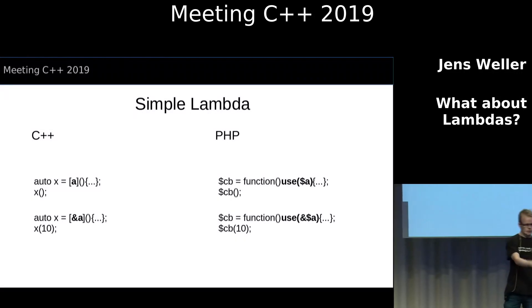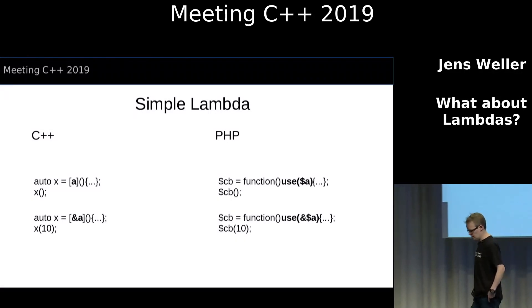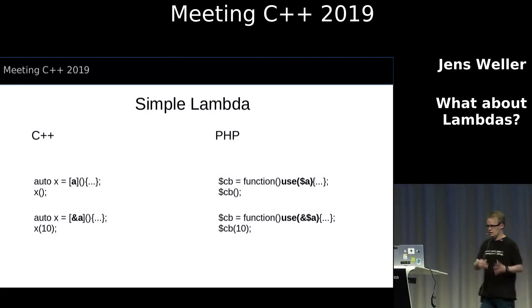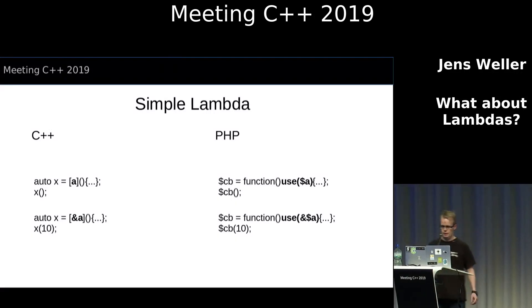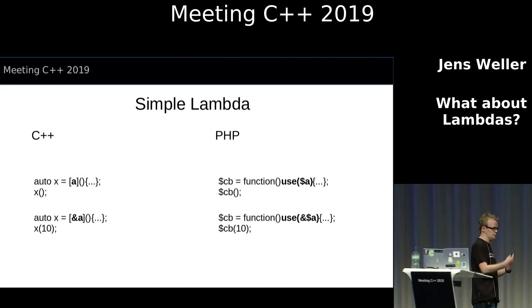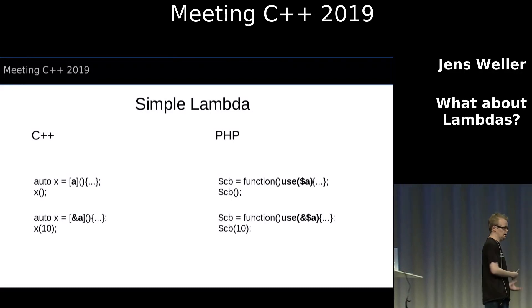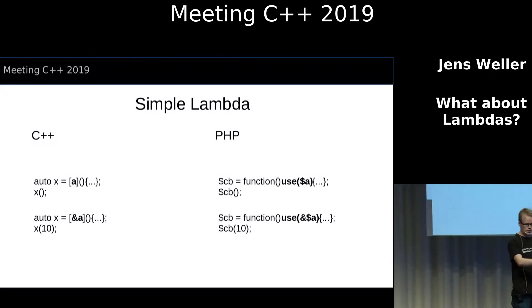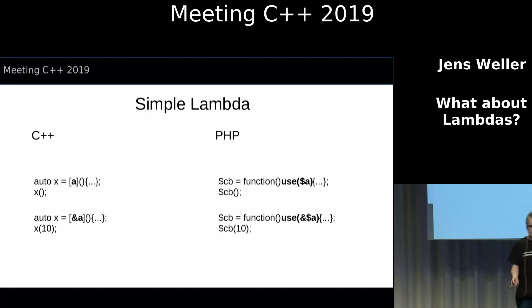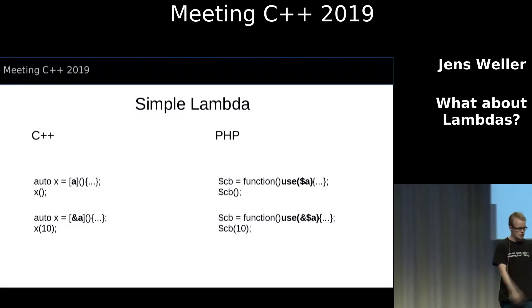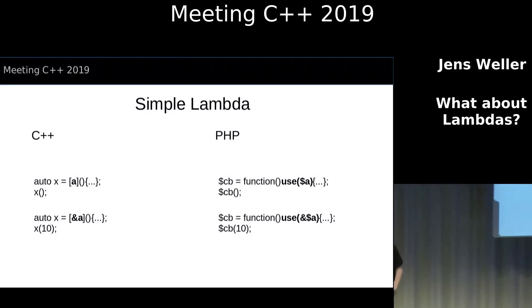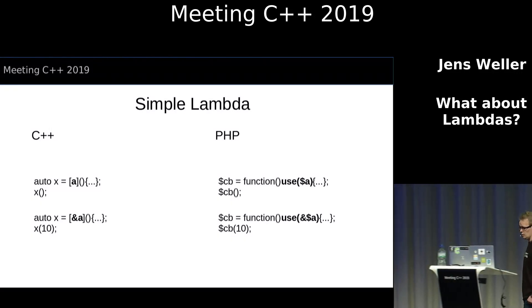Then you also have this odd functionality that you can actually put a context into the lambda, which is not handed from the outside when it's called as a callback or applied in an algorithm. So you can put something there. PHP does it again a bit more readable with the `use` keyword, and they also have the ampersand syntax for having a reference.